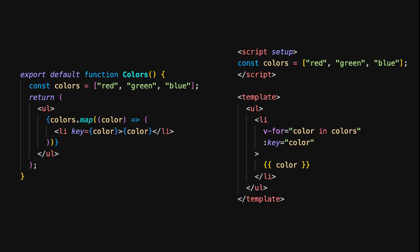Looping through arrays and rendering elements dynamically is a common task in any application. In React, you'd typically use the map function to loop over an array and render the elements. In Vue, we use the v-for directive to loop through the colors array and render a list item for each color. Just like in React, we use a key attribute to uniquely identify each list item. However, Vue's v-for syntax is more declarative, making it clear that we're iterating over an array within the template itself.